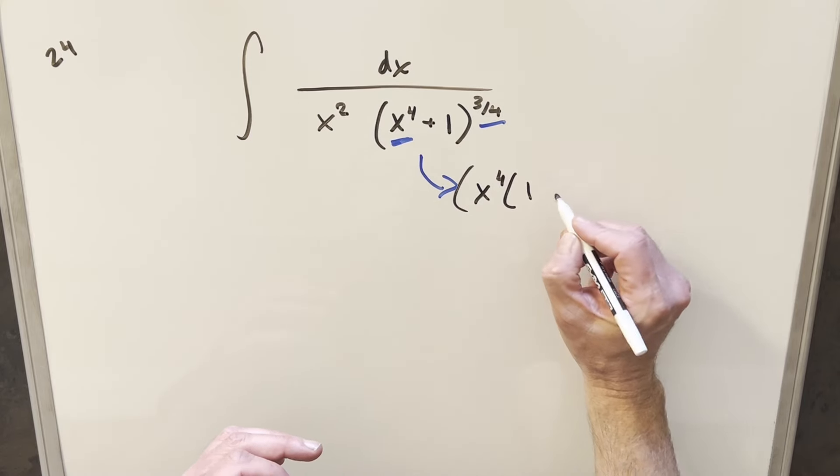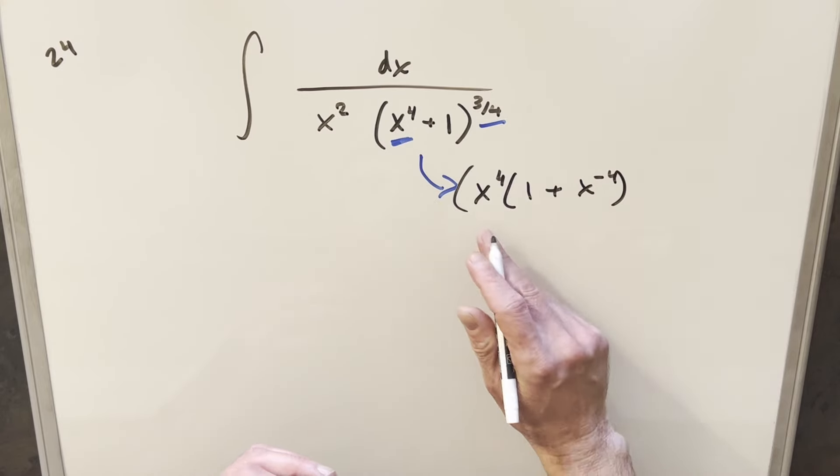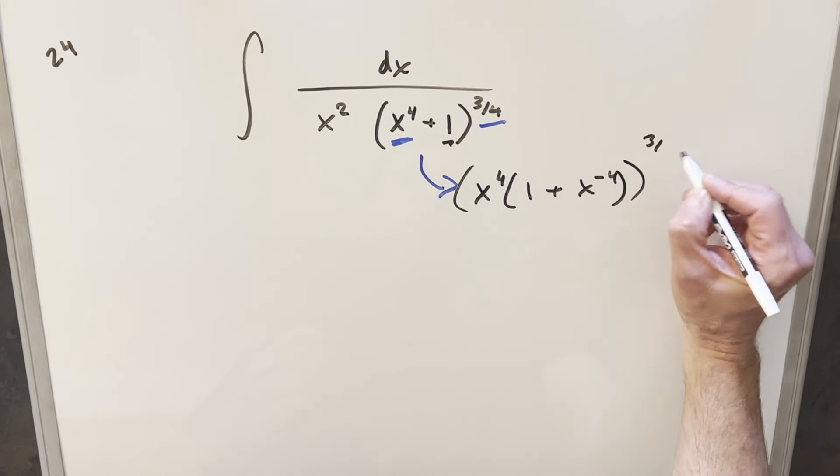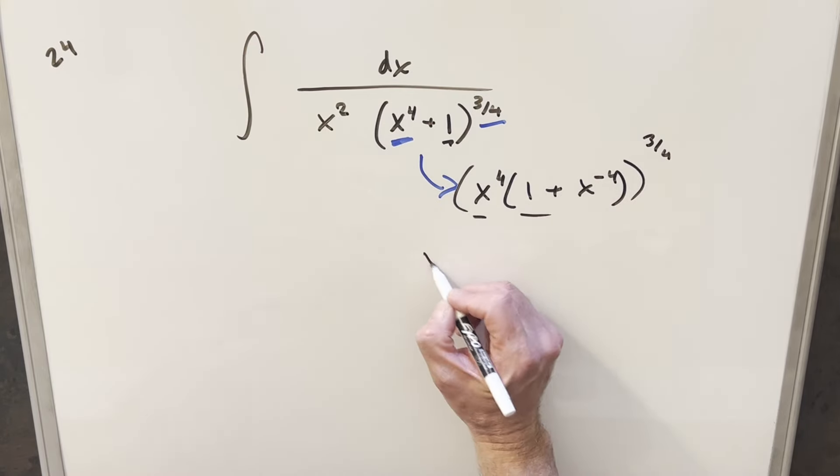Doing that, what's inside is going to become 1 plus x to the minus 4th. Just noticing that x to the 4th times x to the minus 4th gives me this 1 right here, and then this is all to the 3/4ths power. So then what I can do, we're multiplying here so I can separate this out.